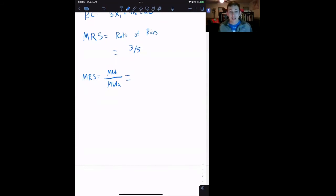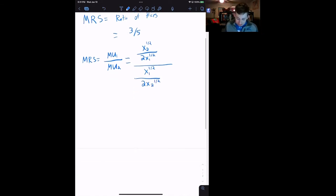So the marginal utility of good one is the derivative of this utility function with respect to X1, and that's going to be X2 to the one-half over 2X1 to the one-half. Marginal utility of good two is very similar: X1 to the one-half over 2X2 to the one-half. We'll simplify that before we set it equal to the ratio of prices.